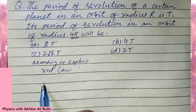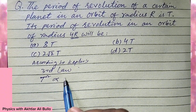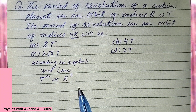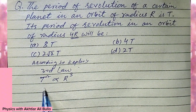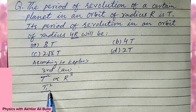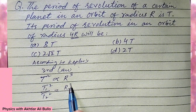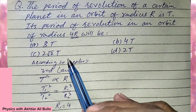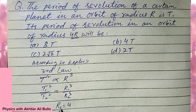the square of the time period is directly proportional to the cube of the radius — that is, the distance. So T1² / T2² is equal to r1³ / r2³. We have to find T2, and r2 is given,